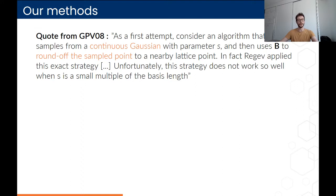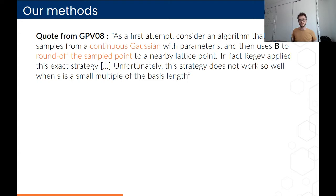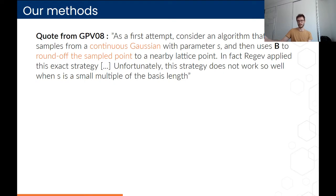Now I describe the idea behind our framework using the simplest instantiation: using the round-off algorithm to sample a uniform distribution over a hypercube. Starting from a quote from GPV, the described strategy for sampling discrete Gaussians is to first sample from the continuous Gaussian, then round these samples to the lattice using the round-off algorithm. They explain that for the output distribution to be close to discrete Gaussians, you need a somewhat large standard deviation, because this procedure samples from the so-called rounded Gaussians, which differs from discrete Gaussians.